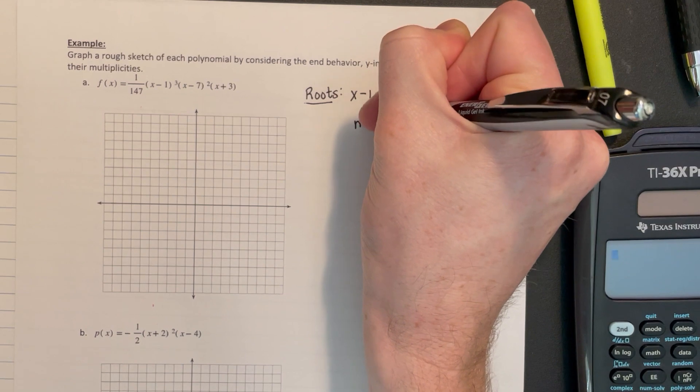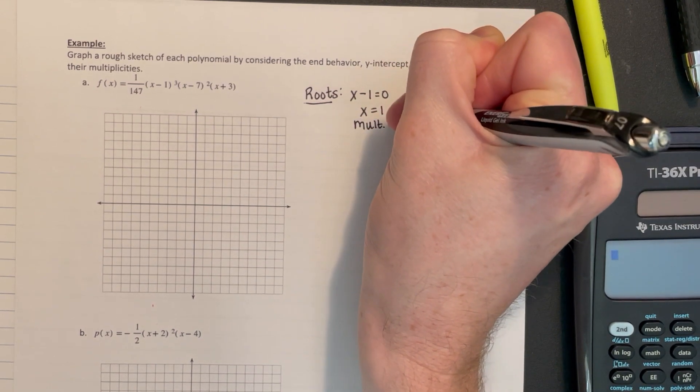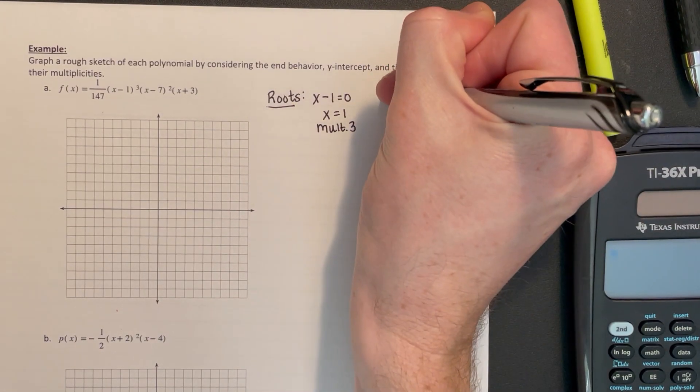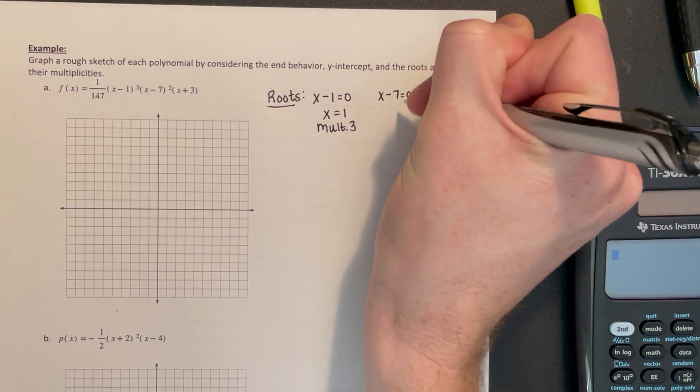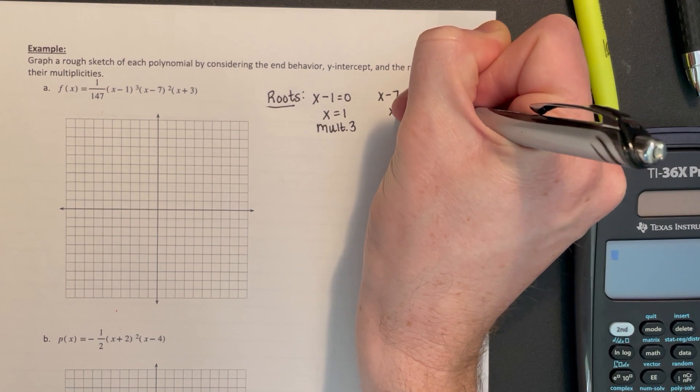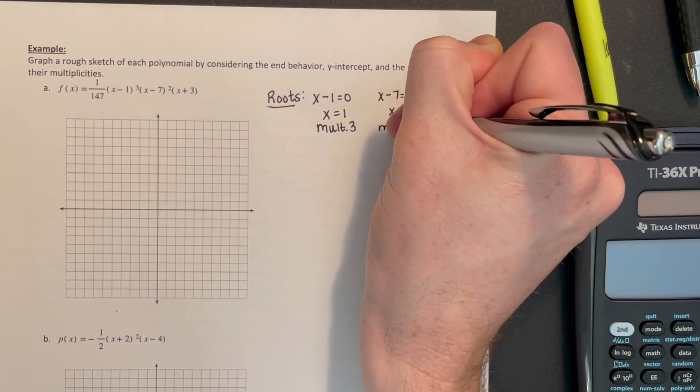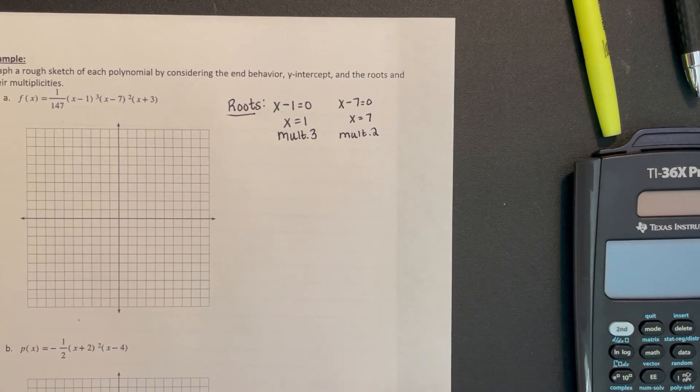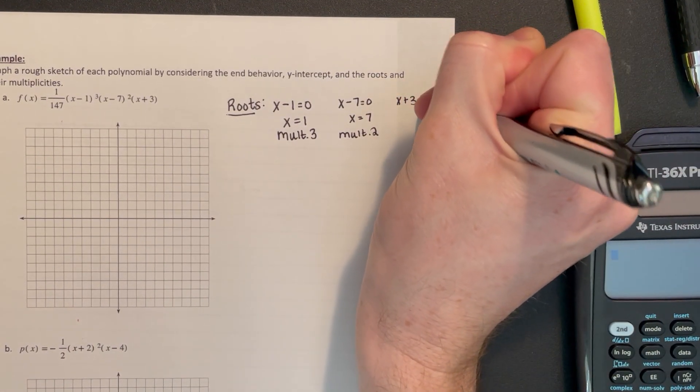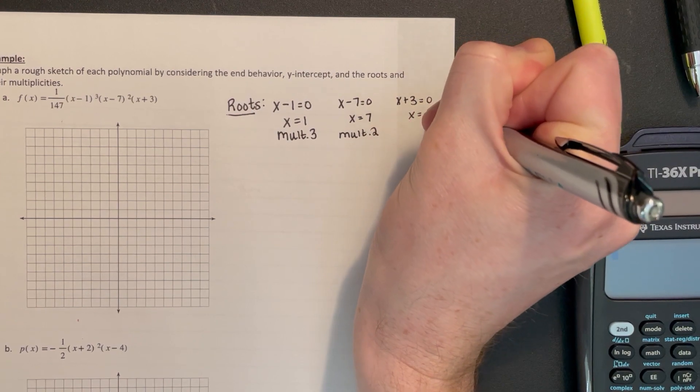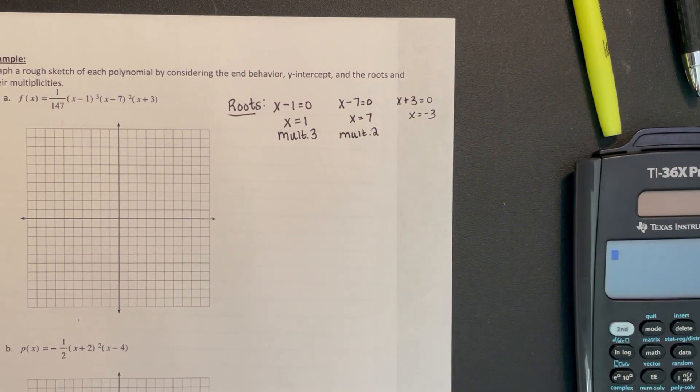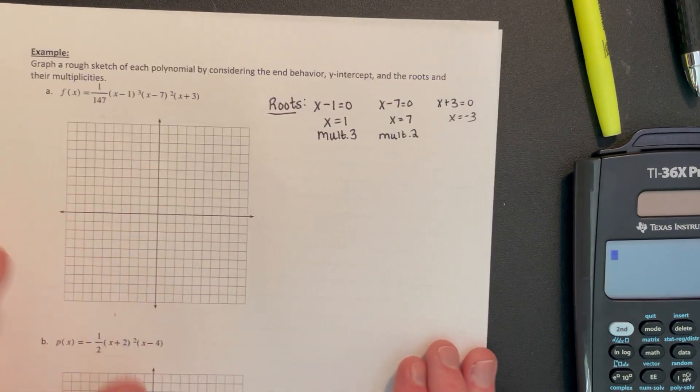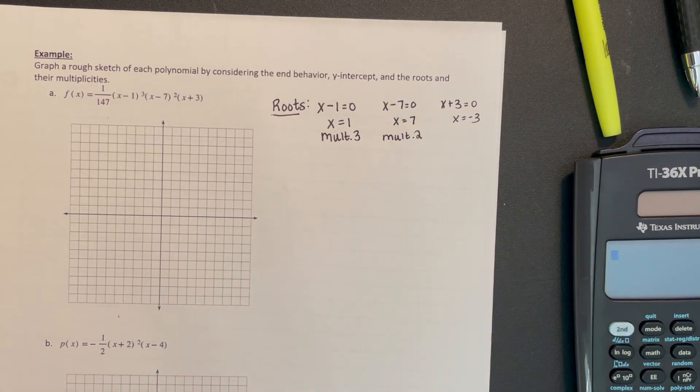It is multiplicity 3 because it's (x-1) cubed. We have x minus 7 equals 0, so x equals 7 multiplicity 2. And x plus 3 equals 0, so x equals -3. It's just multiplicity 1 because there's no exponent on that factor. So we have the roots and the multiplicities.